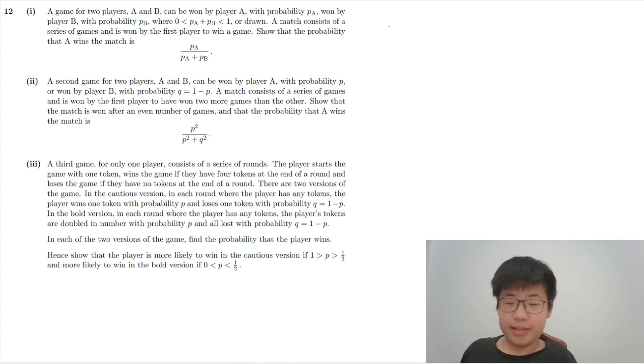Second game of two players can be won by player A or player B. A match consists of two games and is won by the first player to have won two more games than the other. So let's say one player wins N games and the other wins N plus 2. Therefore, the number of games is 2N plus 2. Since N can only be an integer, this makes this even.